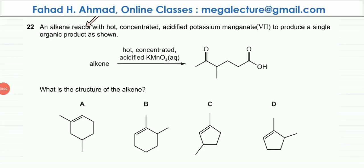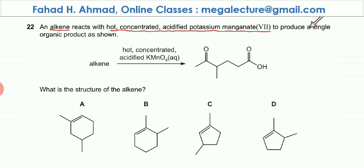The question states that an alkene reacts with hot concentrated acidified KMnO₄ (potassium permanganate). Strong oxidation of alkenes is happening and it produces a single organic product, which is shown. We need to determine the structure of the alkene.